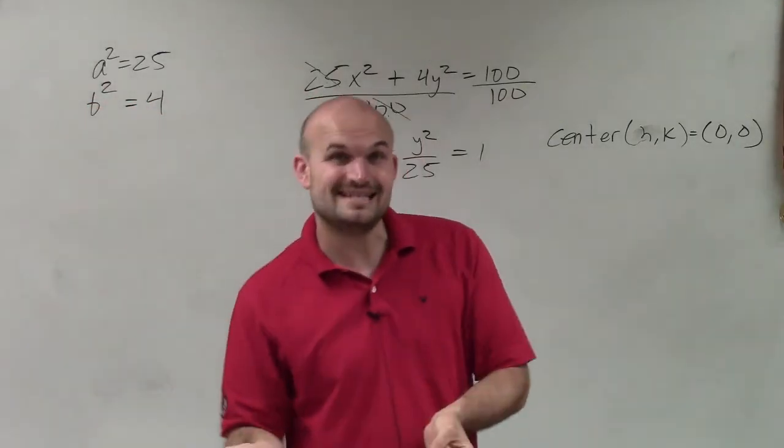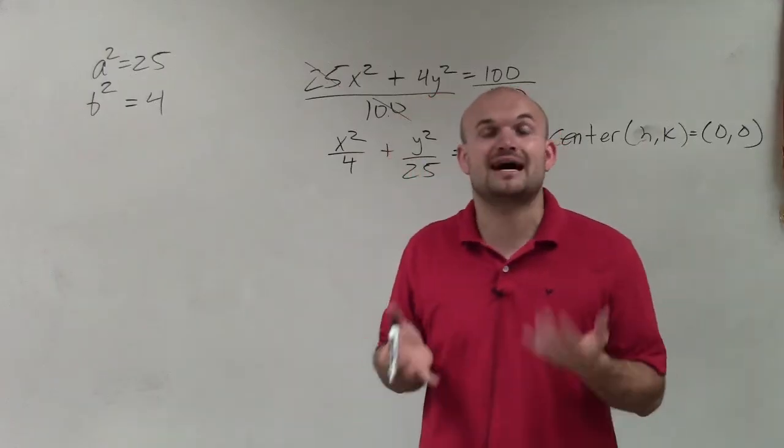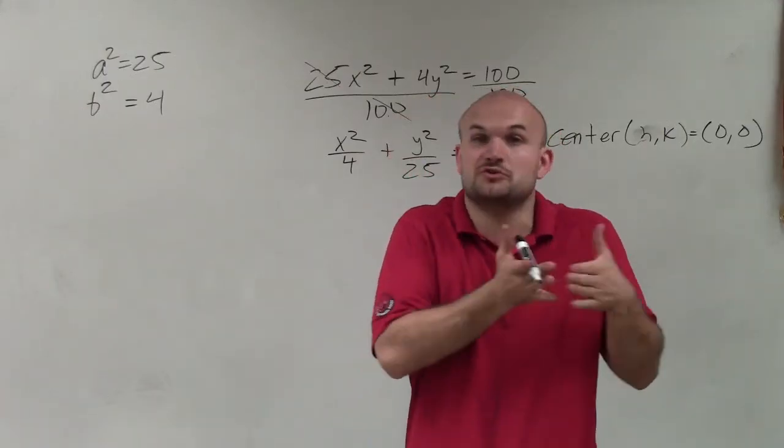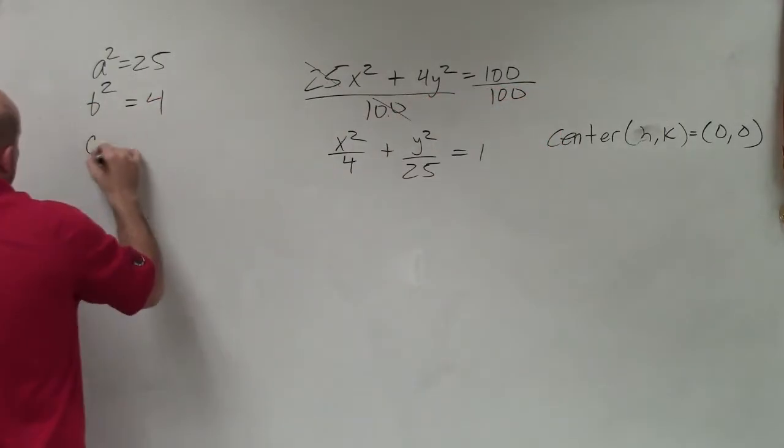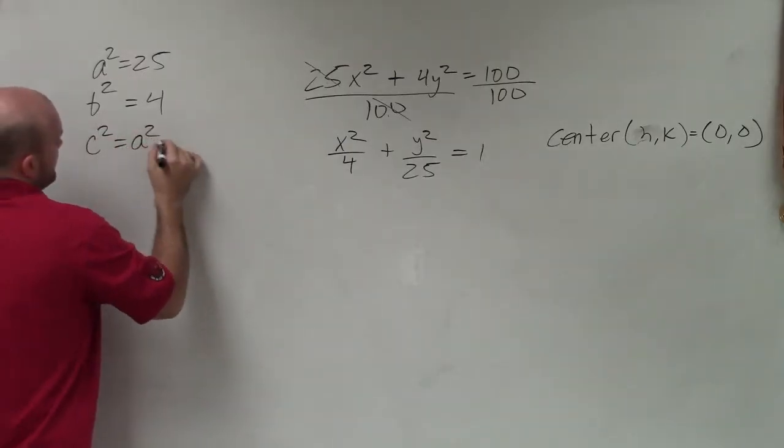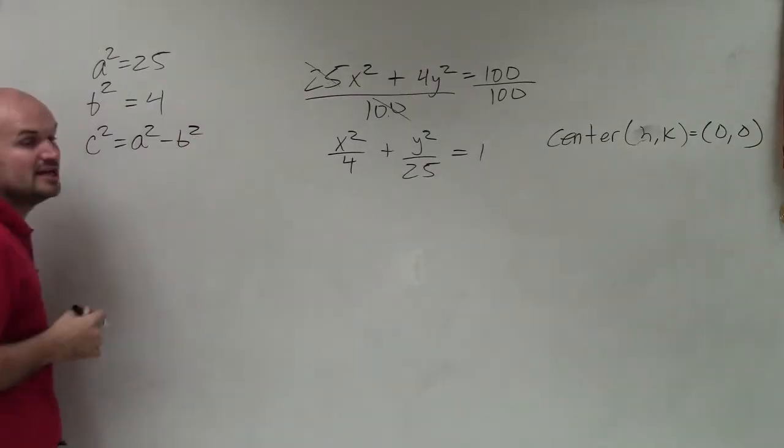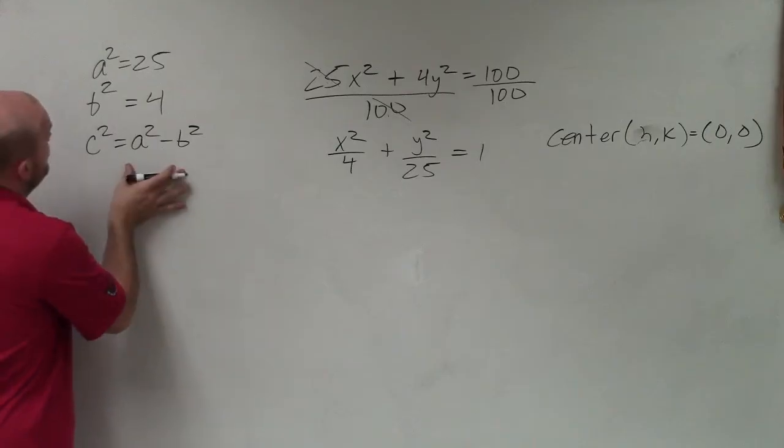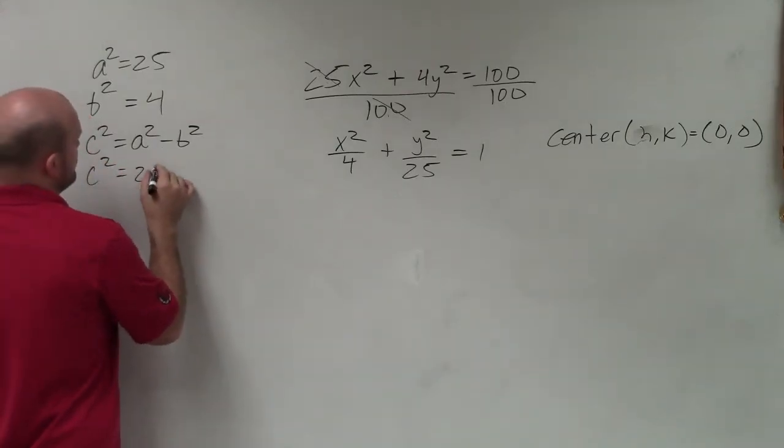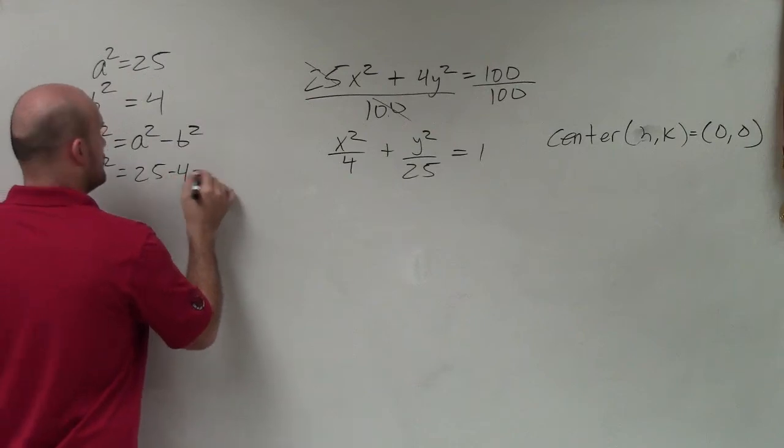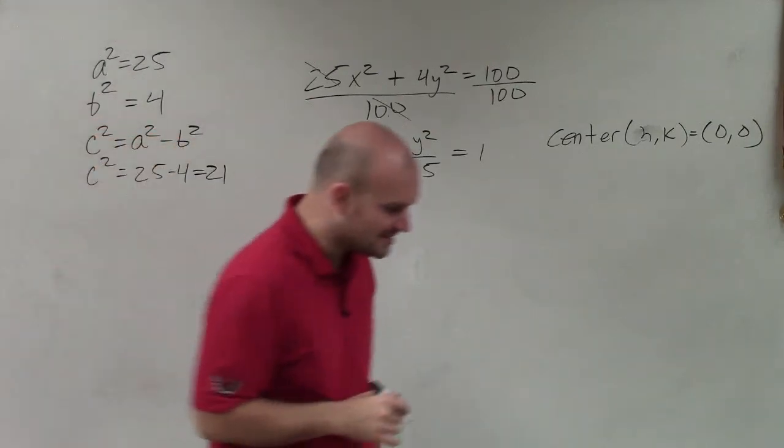b squared is going to equal 4. However, we need to be able to figure out what c squared is, because that's going to help us identify the distance from the center to the foci. So c squared equals a squared minus b squared. That is the equation we're going to use to help us solve for c squared. So c squared equals 25 minus 4, which equals 21.